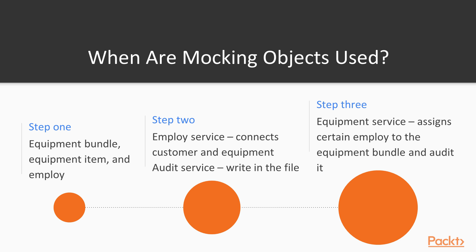So we are going to run through one example. In this example we will see the implementation of Equipment Item, Equipment Bundle Factory, and Employee. We will also see implementations of Employee Service, whose functionality will be to connect Employee and Equipment Bundle, and Audit Service that will store information in some sort of audit file. Finally, our goal will be to develop the Equipment Service class using TDD, which will create a new bundle and assign it to an Employee. After that it should call Audit Service to store information about the Employee and the bundle into a file.